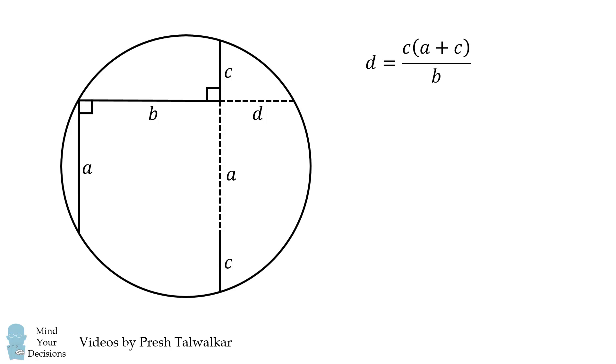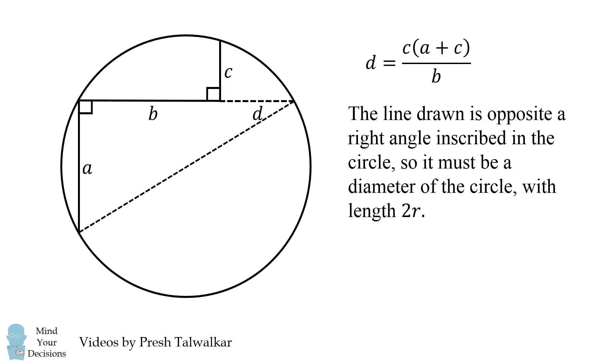Next, we need to figure out some way to calculate the radius of the circle. The way we can do that is by drawing in this line segment. The line drawn is opposite a right angle inscribed in the circle, and therefore it must be a diameter of the circle with length 2R.